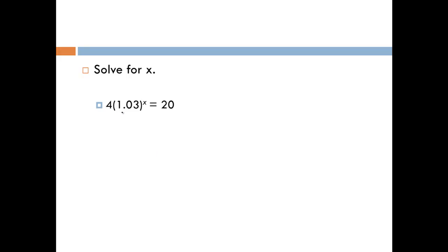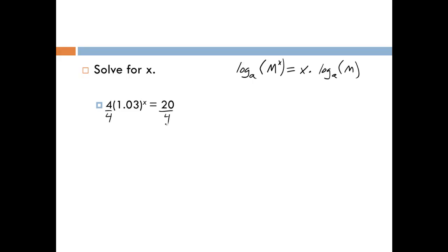In this example, we have 4 times 1.03 to the x power is equal to 20. The base of the exponent is 1.03 — it's not e and it's not 10 — which means we can't use the same cancellation property. Instead, we use the property that the log of any base of a number to the x power allows us to pull the x out front as multiplication. First, we divide both sides by 4, leaving 1.03 to the x power is equal to 5.